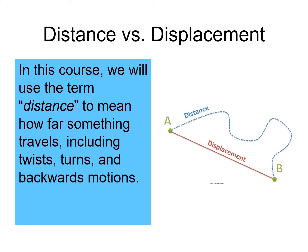So the figure moved backwards and forwards a certain distance. But its displacement is measured in a slightly different way. It's a fine distinction. But we will use the term distance to mean how far something actually travels. This includes any twists, turns, forward, backward, up, down motions.